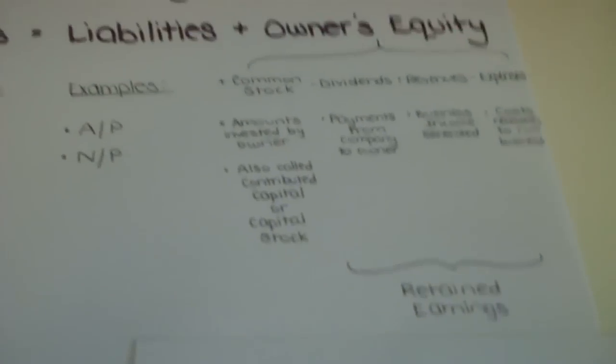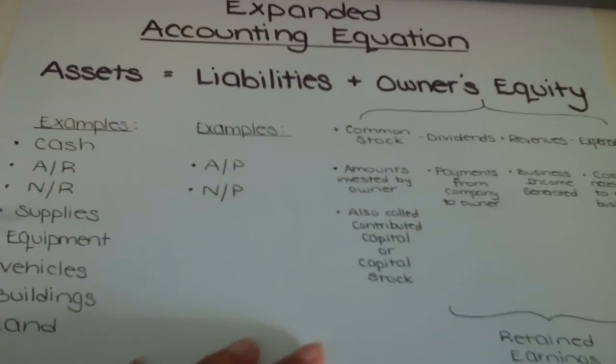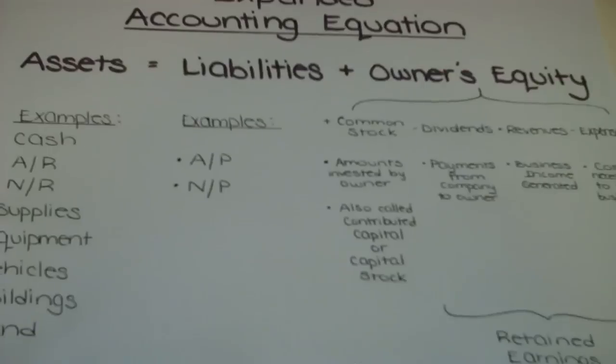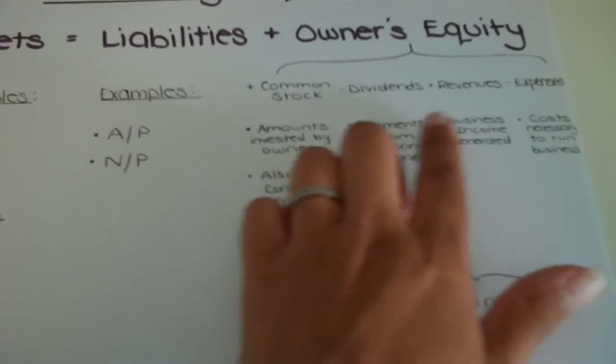Hopefully this has been helpful. Again, just like your basic accounting equation, you're going to need to be familiar with this. So just remember the four sub-categories of owner's equity, being common stock, dividends, revenues, and expenses.